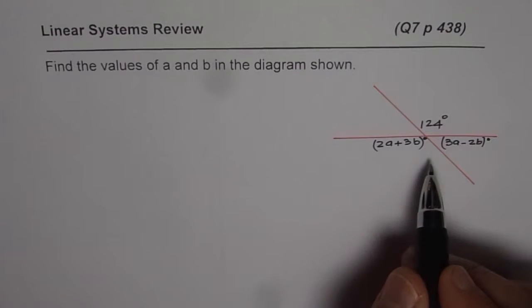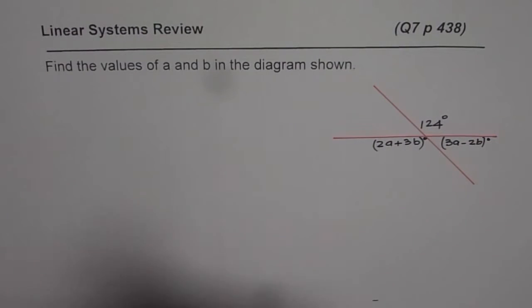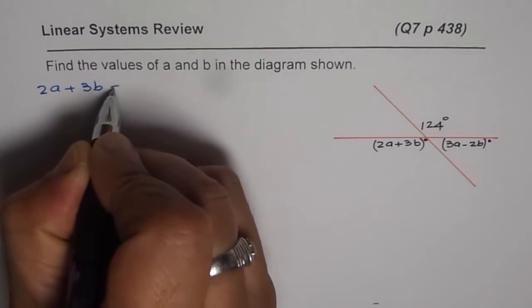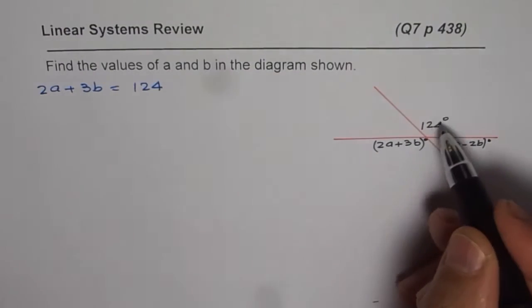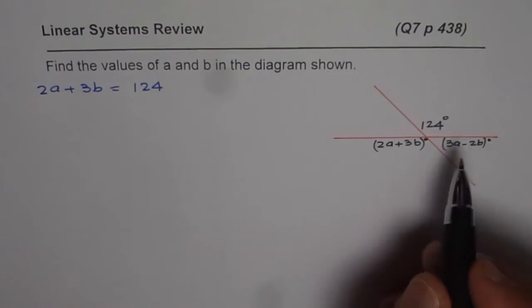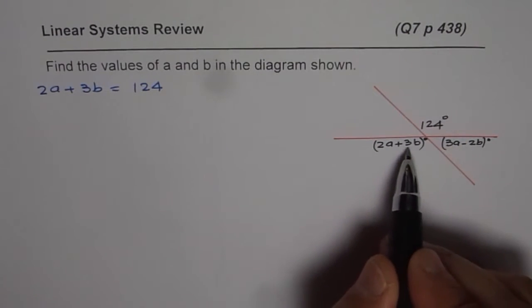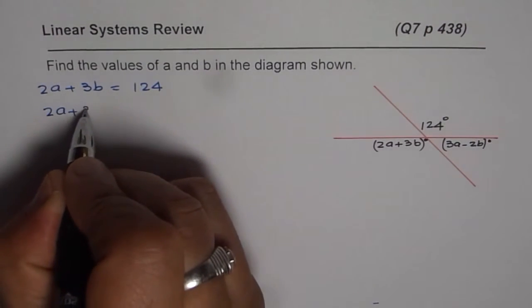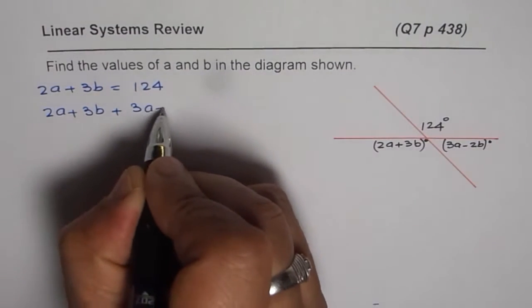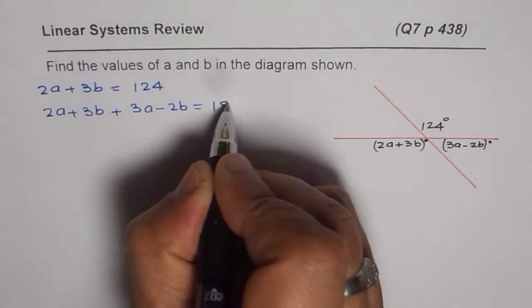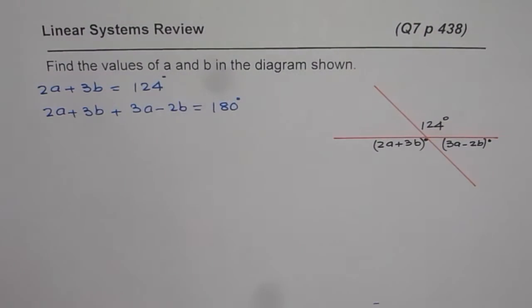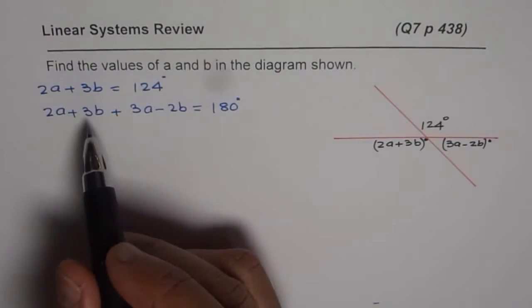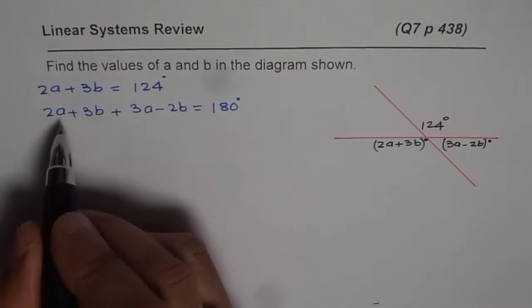So let us form the linear system first. We get two equations from this situation. The first one is 2A plus 3B equals 124. These are vertically opposite angles, they should be equal. The other one is we have a linear pair. So sum of these should be 180 degrees. So the other equation is 2A plus 3B plus 3A minus 2B should be equals to 180 degrees. So we have these two equations which should be solved to find A and B. It is a linear system with two equations and two variables.